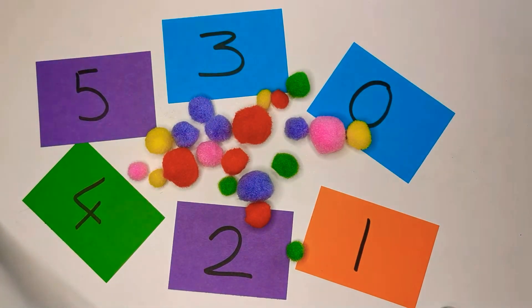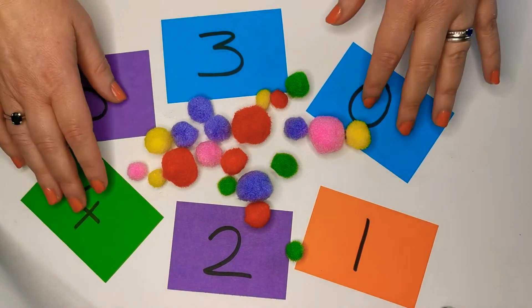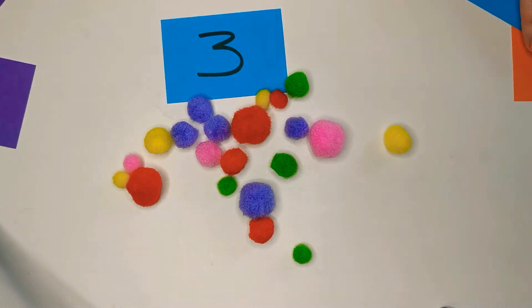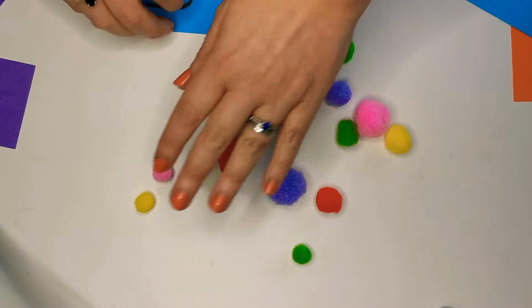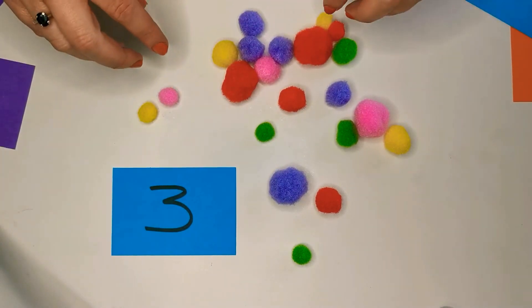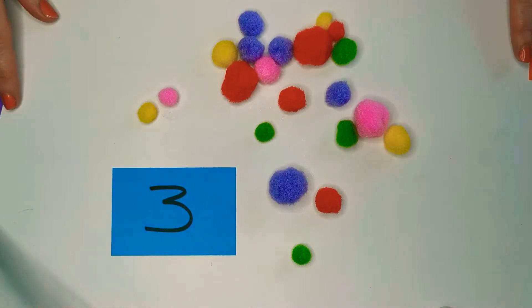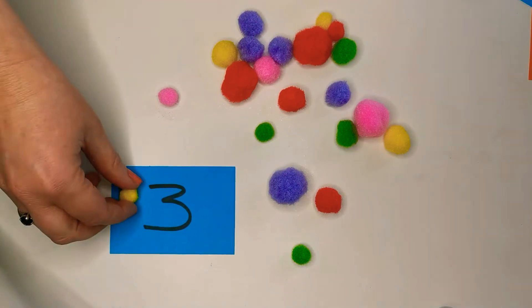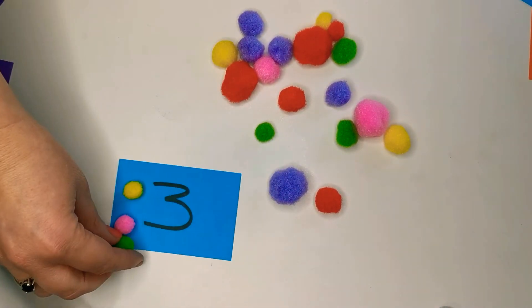The next thing that I need to make sure that I can do is that I can count out the correct number of objects. So if I'm given the number card 3, I know that I can definitely count out only 3 objects. So I can go 1, 2, 3.